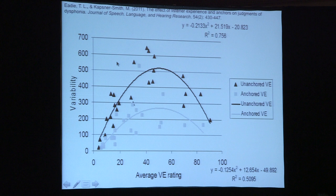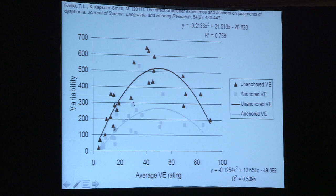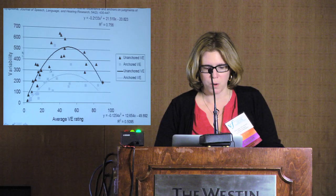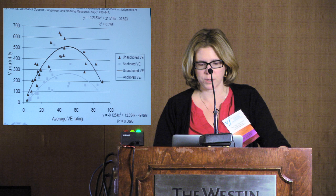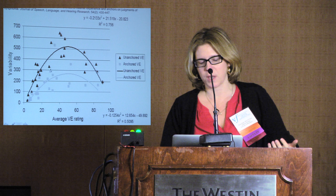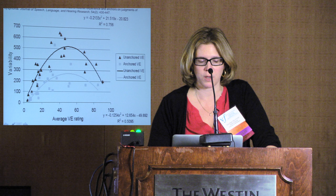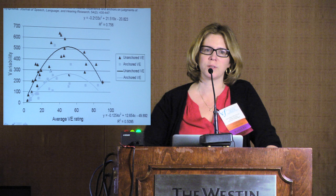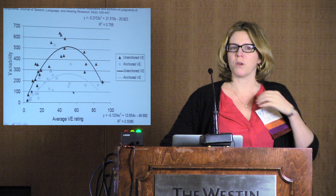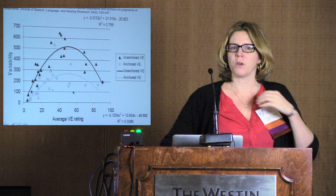Another way of potentially improving reliability is to give people examples of what we mean by breathy or rough, with mild, moderate, and severe examples of those different dimensions, so we can all get on the same page. This is the reverse of the agreement pattern we saw before — here high variability means people were not agreeing at all. You can see in the dark line, when judging strain or vocal effort, there was most variability in the middle without those examples or anchors. But once listeners get those examples, variability flattens. People are trainable and can refine their perceptual ear.